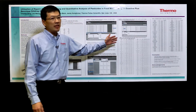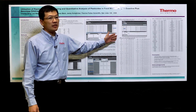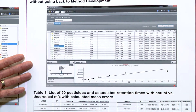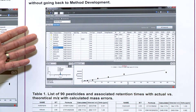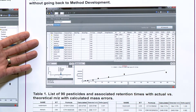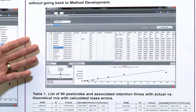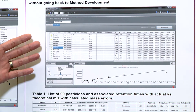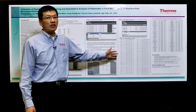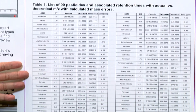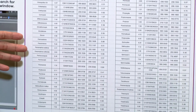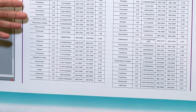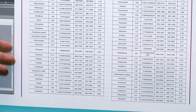Over here we have a special data review area where we can look at all the data and adjust parameters prior to printing the report. Once this is done, you have a quick way of reviewing everything. Down here are the mass accuracies of the 90 pesticides we analyzed — all within less than 2 ppm throughout the whole run.